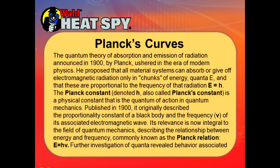The quantum theory of absorption and emission of radiation announced in 1900 by Planck ushered in the era of modern physics. He proposed that all material systems can absorb or give off electromagnetic radiation only in chunks of energy — quanta E — and that these are proportional to the frequency of that radiation. The Planck constant, denoted H, is a physical constant that is the quantum of action in quantum mechanics. Originally described as the proportionality constant of a black body and the frequency of its associated electromagnetic wave, its relevance is now integral to quantum mechanics describing the relationship between energy and frequency, commonly known as the Planck relation.